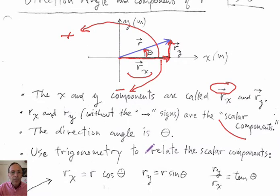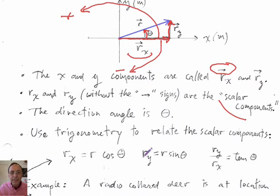Now, we can relate the scalar components, the rx and ry, to theta through trigonometry. So we have that rx equals r cosine theta. And ry equals r sine theta. And the tangent is ry over rx.